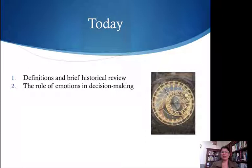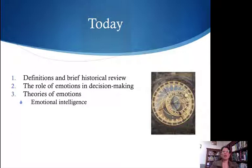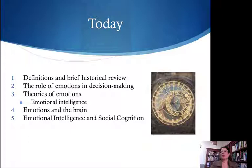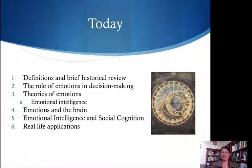The main one: we're going to look at some definitions, try to understand what we mean by emotions and how that's different from feelings. Then this big idea that there is no decision without emotions. We're going to connect that to some classic theories of emotion and more modern ideas about emotional intelligence and how that can be cultivated. We'll look briefly at mechanisms in the brain — the physiological networks of emotional processing and neurotransmitters — and link back to social cognition and real-life applications.